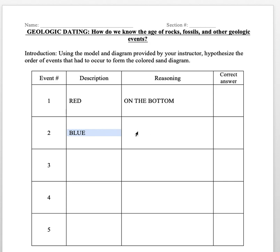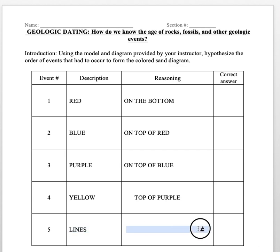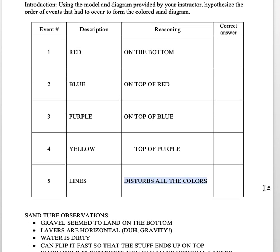Next up had to be our blue sand because it was on top of the red, then we had to do our purple sand because it was on top of the blue, and then our yellow sand because it was on top of the purple, which finally left us with those pretty designs made by those lines. We could tell that came last because it disturbed all the other colors.